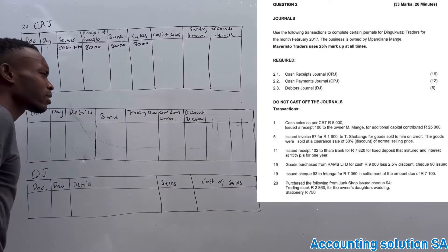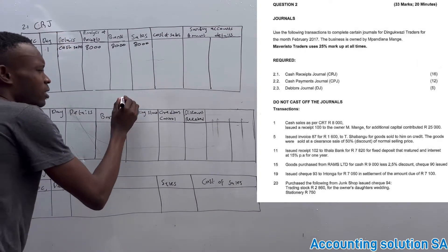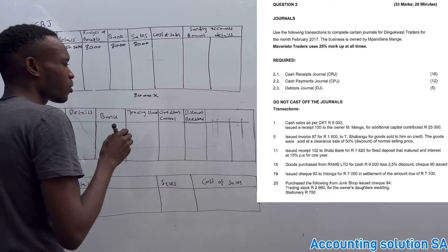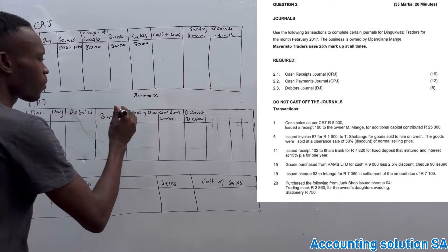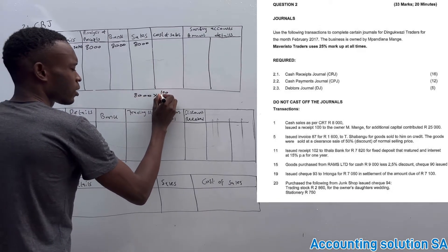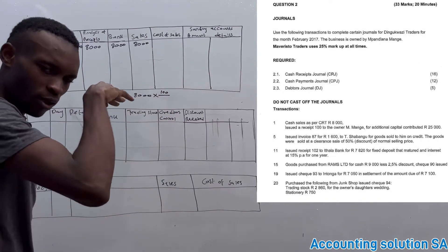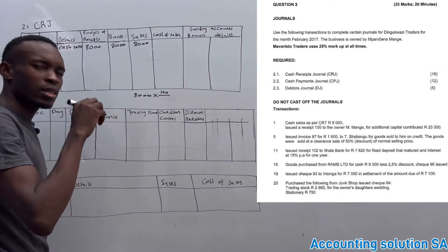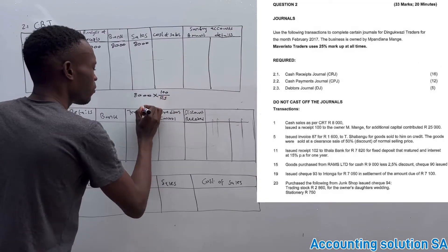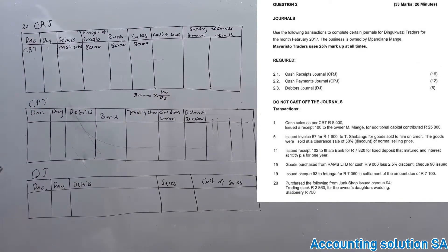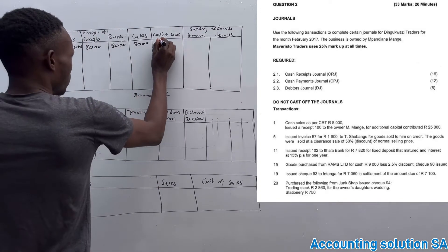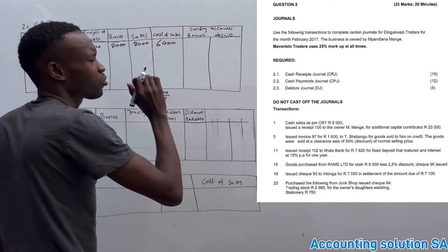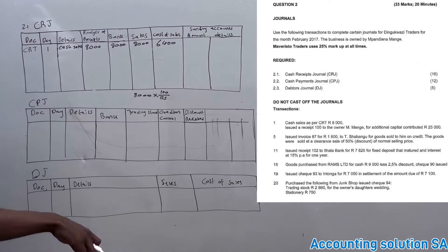For cost of sales, we calculate using a markup. The calculation is 8,000 multiplied by 100 over 125 — because we have a markup of 25, we add 100 plus 25 to get 125. If you do this calculation you are going to get an amount of 6,400. This means the sundry account is not going to be affected because we have a column for cost of sales.